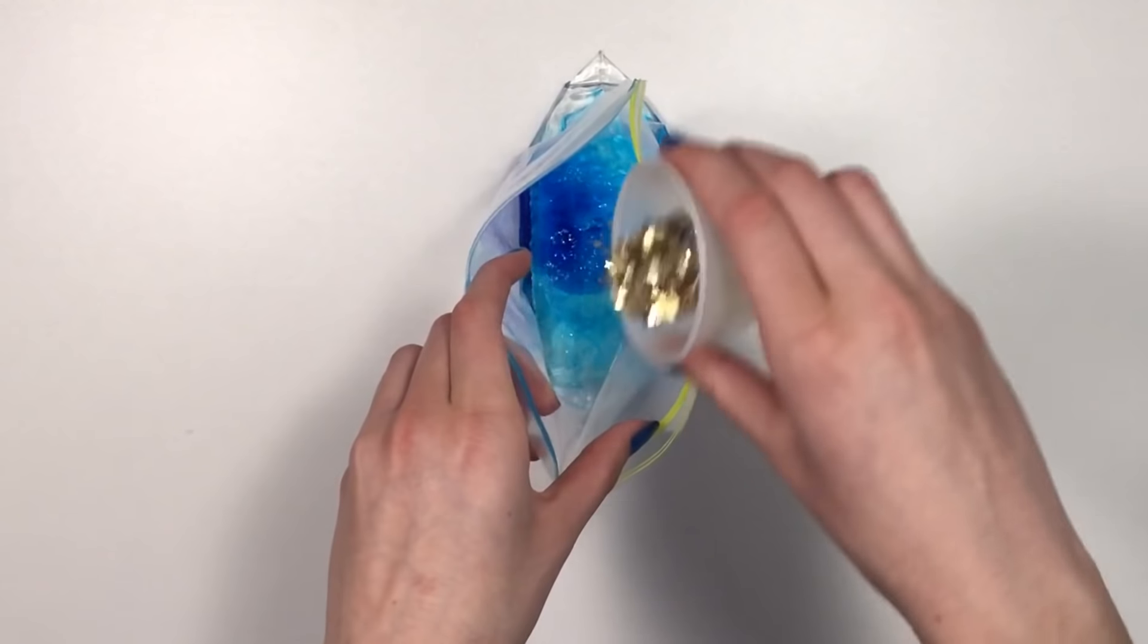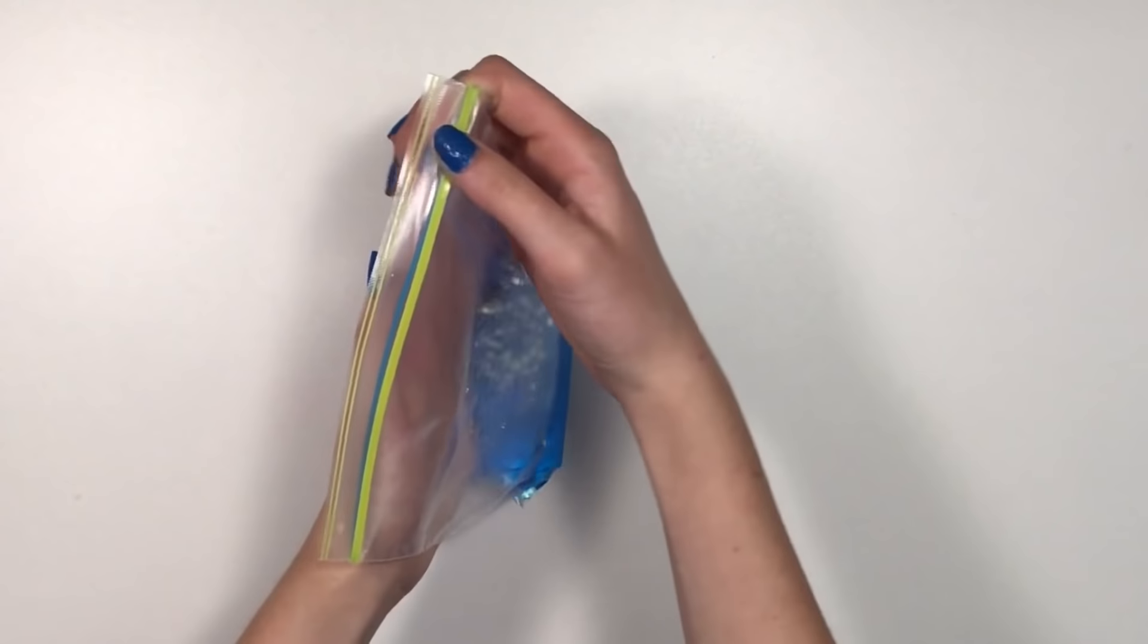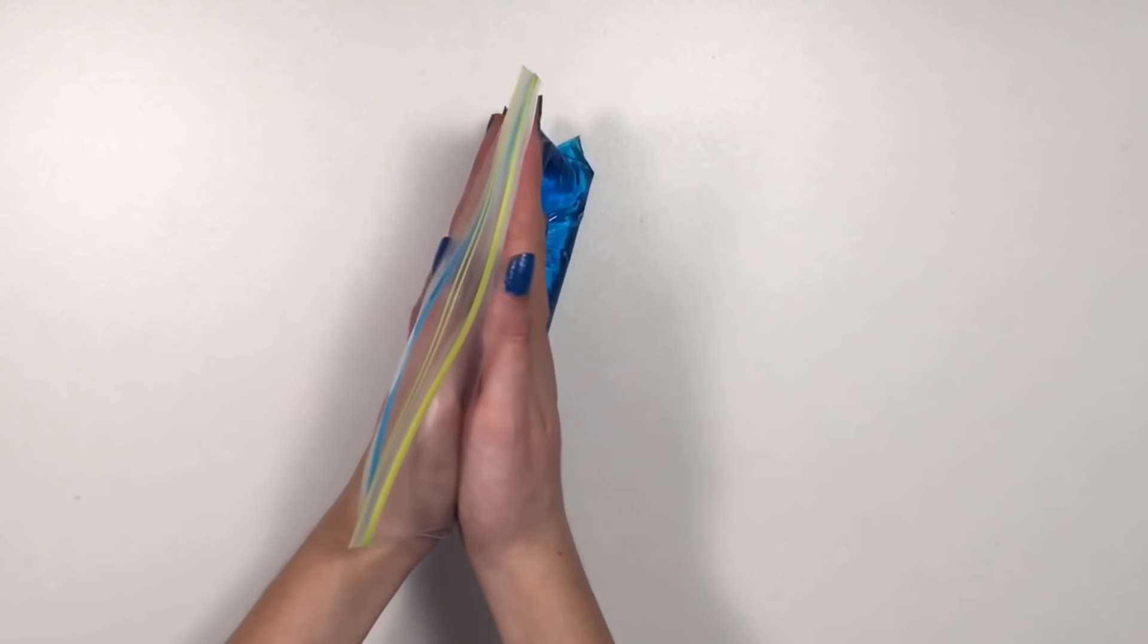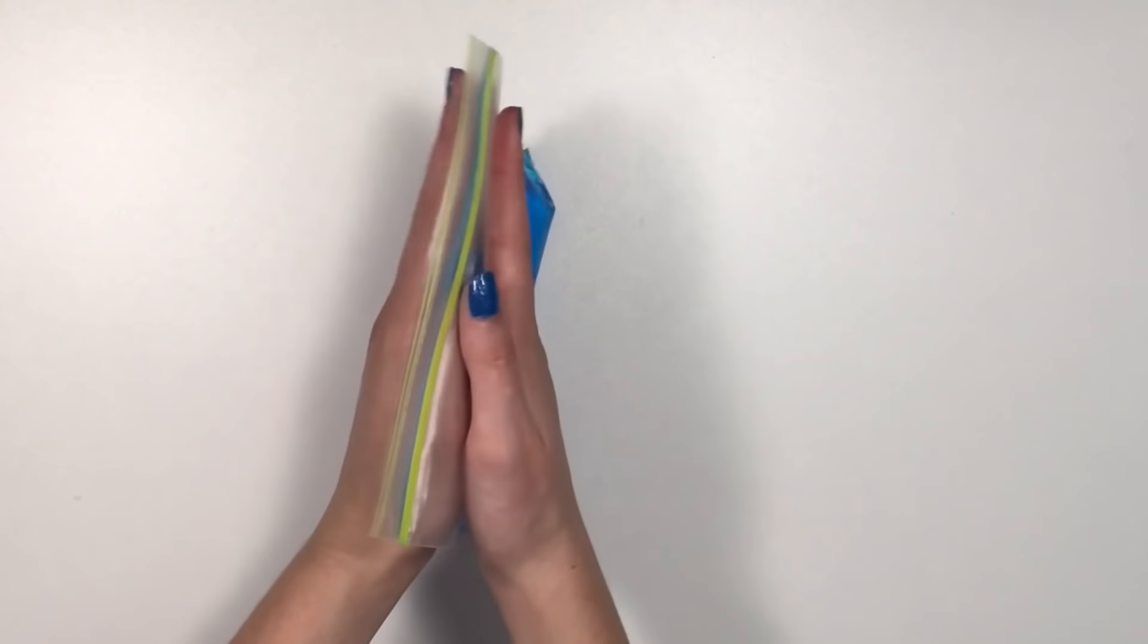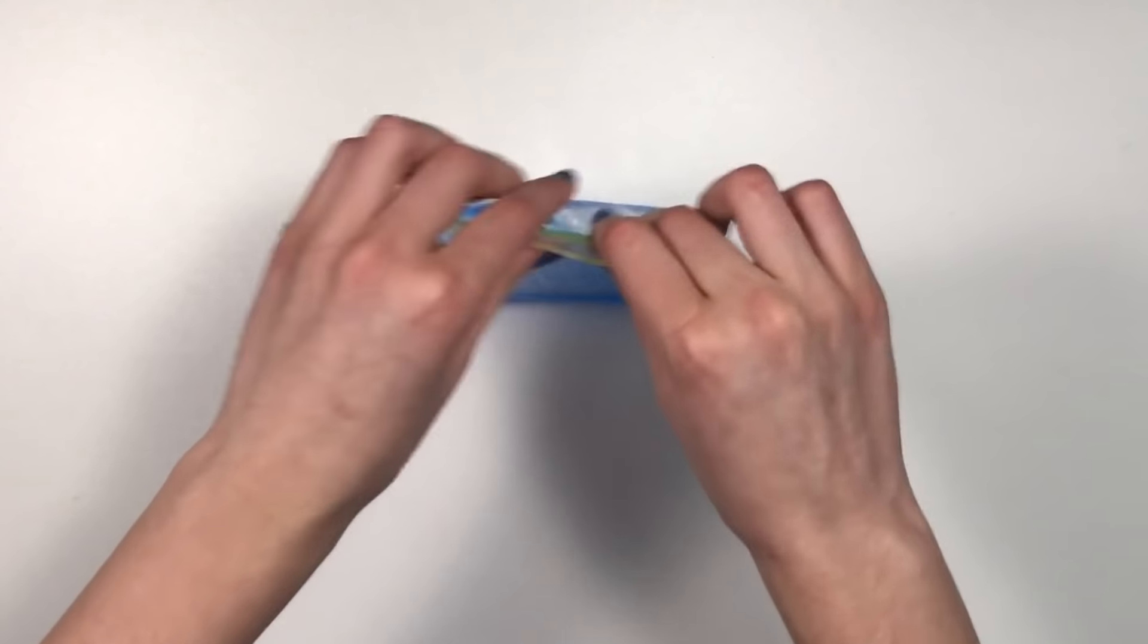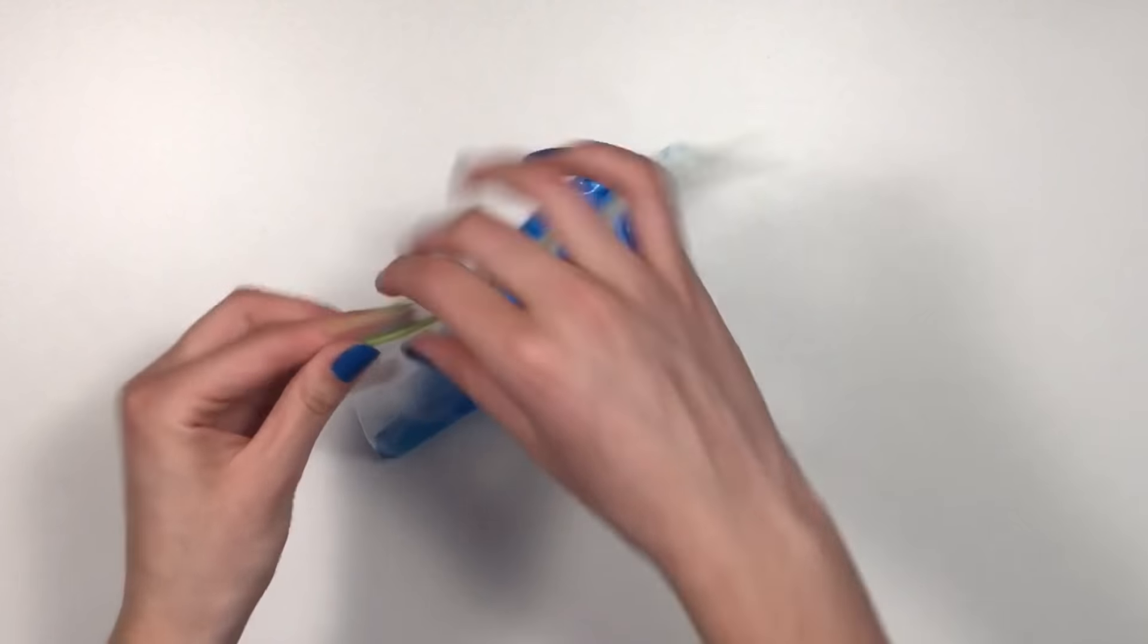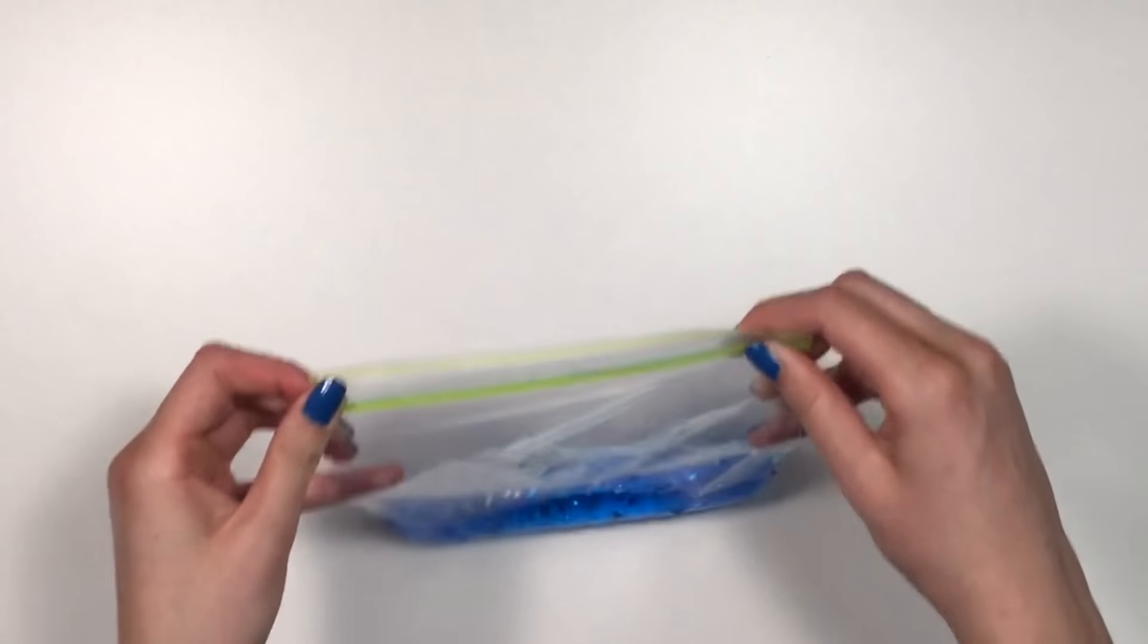And for a final touch, I have these golden star glitters and I'm also gonna put them in, just a tiny bit. Okay, now I'm gonna squeeze out all of the air. Make sure there's no air in here.